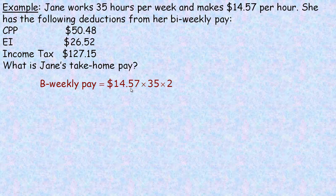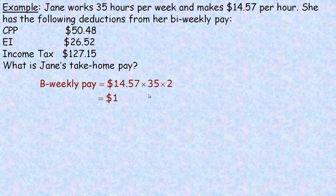So we would take her hourly rate and multiply it by 35, and bi-weekly means every two weeks, so we also want to multiply that by two. This is actually 70 hours on this pay, not 35, because it's every two weeks. And so that gives us $1,019.90 — that's her gross bi-weekly pay.